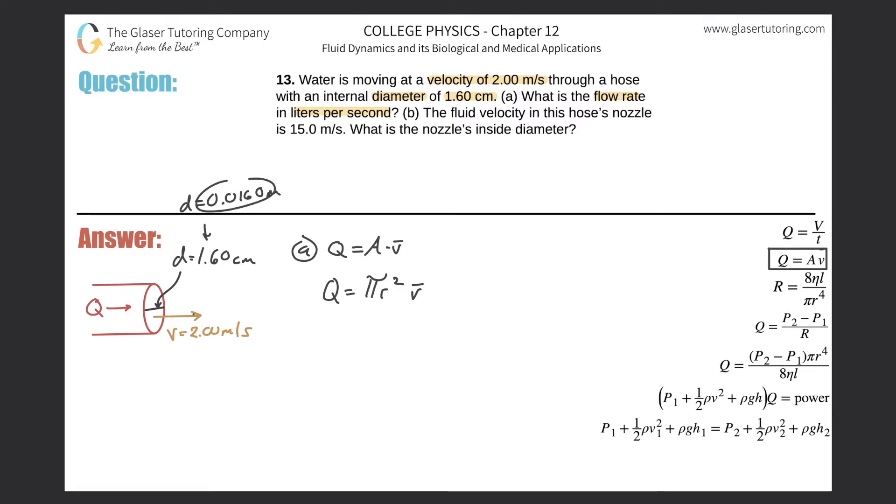Then, knowing that this is the diameter, you can just take this and divide it by two to then find the radius. So that's what I'm going to do here in the formula. So this is going to be pi multiplied by the radius, which is 0.0160 divided by two squared, then multiplied by now that velocity of 2.00. So let's see what we get for the volume flow rate. So this is going to be pi times parentheses 0.016 divided by two, square that, and then multiply by two.